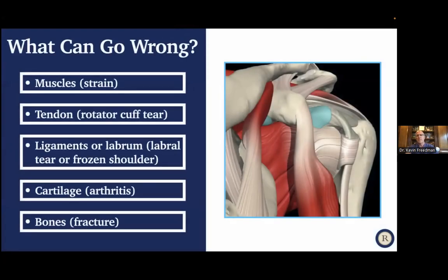So what can go wrong? First, there are muscles, which can get strained. There are tendons — the attachment of muscle to bone — and the rotator cuff is the most important tendon about the shoulder. There are ligaments, which stabilize the bones and include the labrum. Sometimes those ligaments get inflamed and constricted, causing a frozen shoulder. There's cartilage, affected in arthritis. And then there are bones — I see shoulder fractures involving the clavicle, the humerus, or the socket.